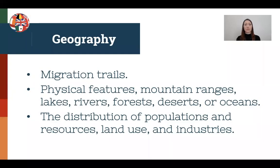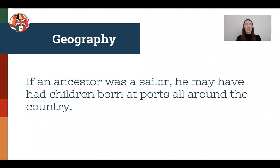Moving on to geography — the most important thing to consider is migration trails. If we can get information about migration trails and how the area was settled, it can be very helpful in tracing ancestry back through time. Other considerations include physical features like mountain ranges, lakes, rivers, forests, deserts, or oceans, and also the distribution of populations and resources, land use and industries. For example, if your ancestor was a sailor, he may have had children born at ports all around the country, so you may want to get familiar with shipping routes, what path certain boats took, and what ports there were.